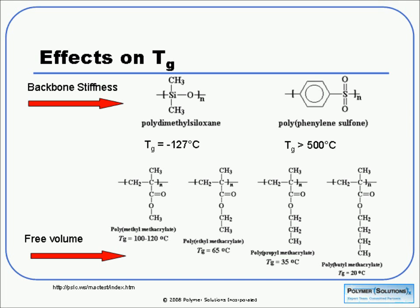Backbone stiffness affects Tg. Polydimethylsiloxane has an oxygen in its main chain, and that oxygen linkage has a lot of flexibility — there can be rotation around it. As such, you don't have to put much energy in to get a lot of mobility, and therefore it has a very low Tg of about minus 127°C. At the opposite extreme, polyphenylene sulfone has a bulky phenyl ring in its backbone, making it a stiff chain. You have to put a lot more energy in, and its Tg is therefore much higher at about 500°C.